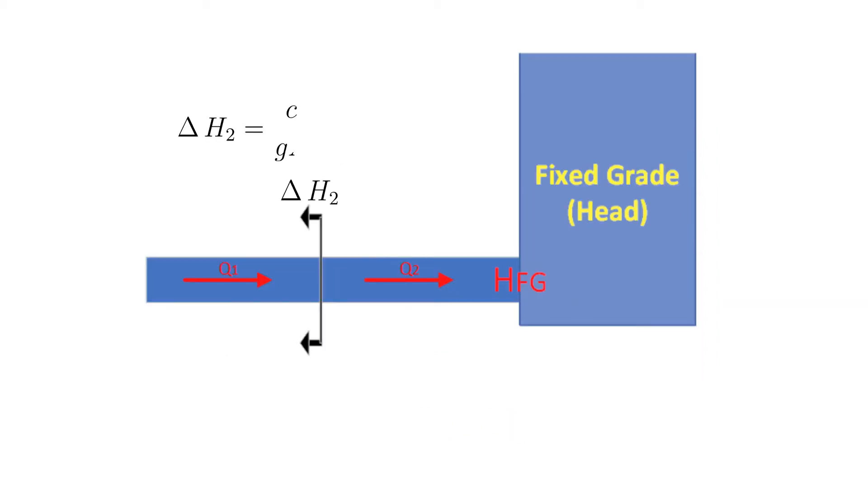Shown are the conditions after the wave reflects off the large tank. The reflective wave, denoted as delta H2, is traveling from right to left. The head adjacent to the tank remains constant at the head of the tank denoted as HFG. It is also equal to the pre-wave head plus delta H1 and delta H2.